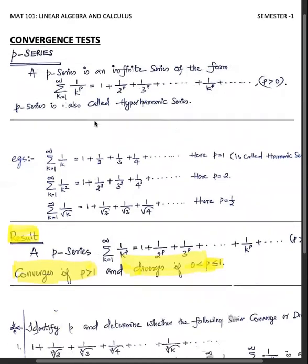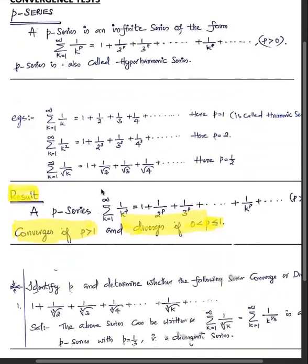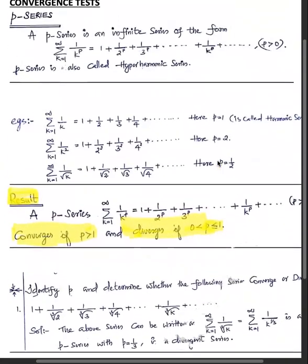For p=1, it is the harmonic series: summation 1/k = 1 + 1/2 + 1/3 + ... For p=2, the series is summation 1/k² = 1 + 1/4 + 1/9 + ... For p=1/2, the series is summation 1/√k = 1 + 1/√2 + 1/√3 + ... Now the theorem for convergence of a p-series: